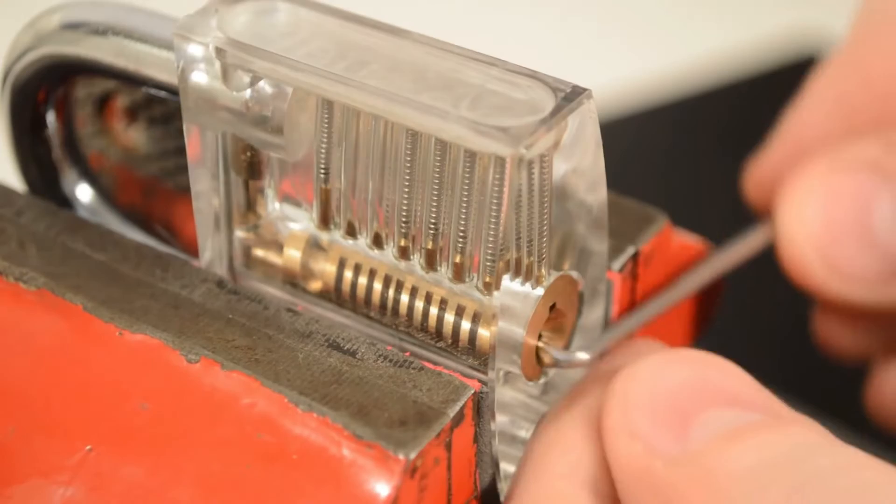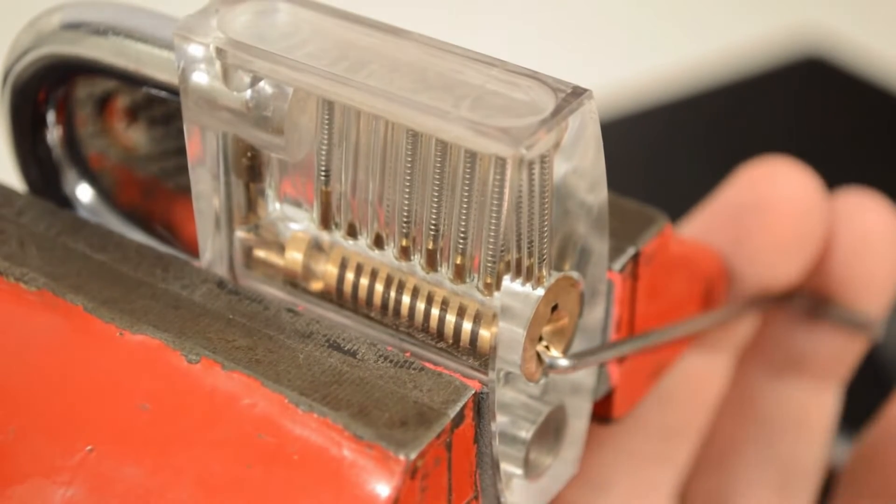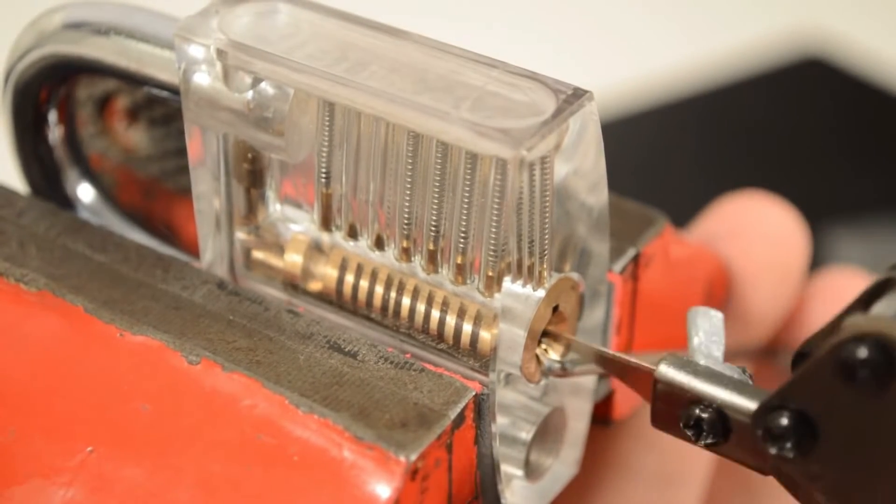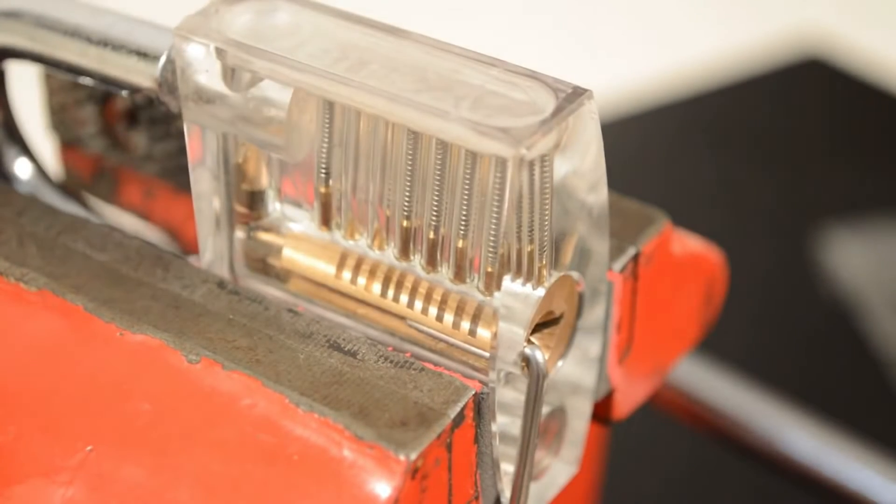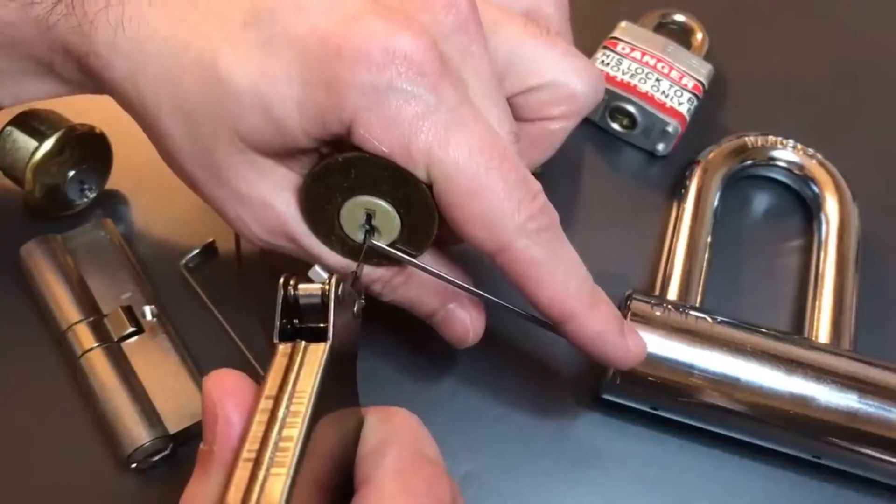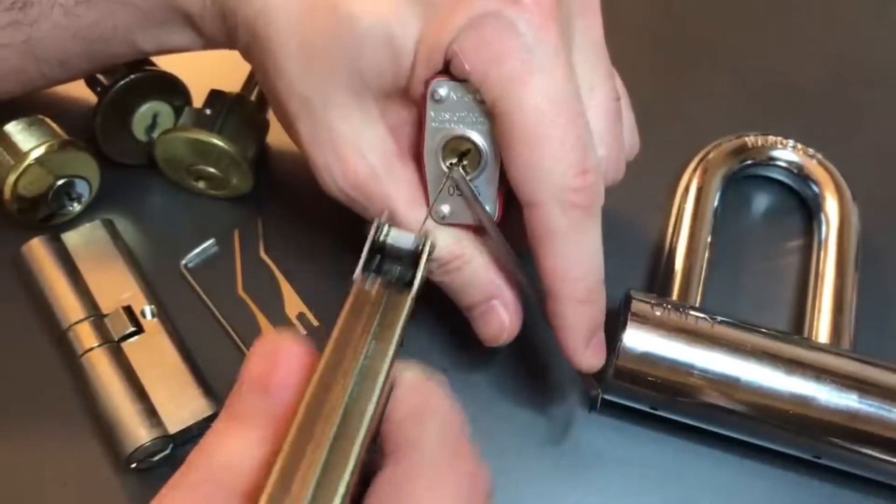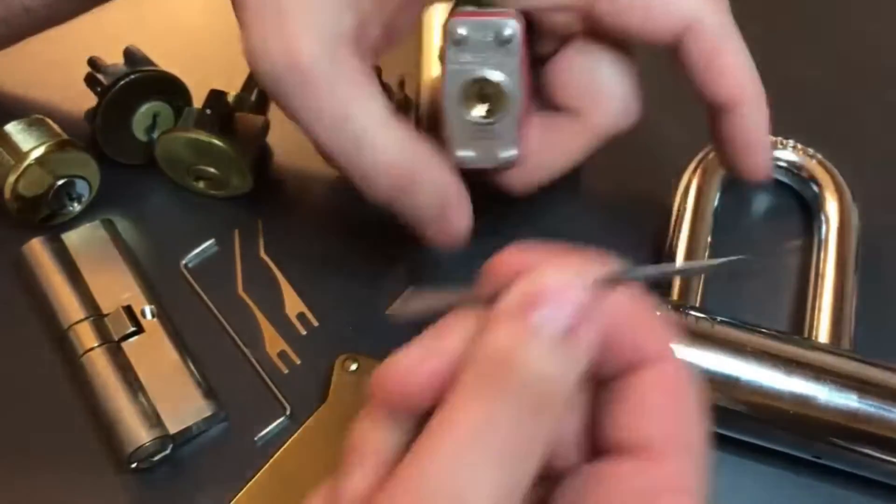The snap gun strikes all of the bottom pins at once with a strong impact, and then withdraws again. Like most gadgets, this one also has a primary purpose to try and open a broken lock, or if you lost your key and similar situations.